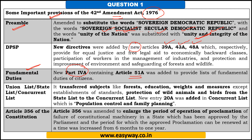There were also important amendments regarding transferring subjects like forest, education, weights and measures (except establishment of standards), and protection of wild animals and birds from the state list to the concurrent list. As we know, there are three important lists: union list, state list, and concurrent list. Both the union government and state governments can frame laws on subjects in the concurrent list. A new entry 20A — population control and family planning — was also added to the concurrent list.